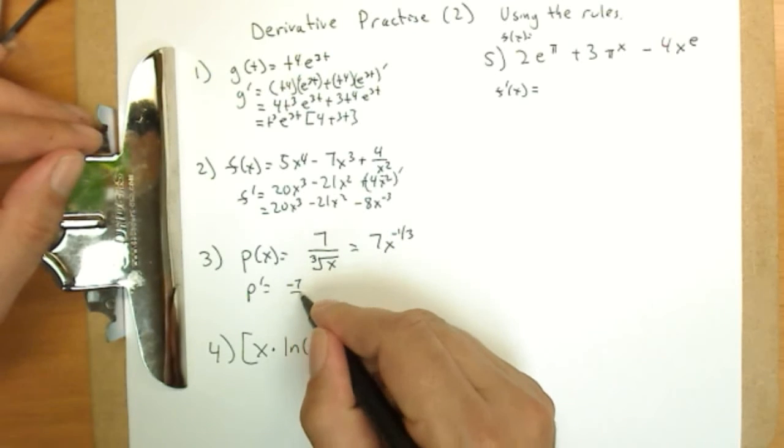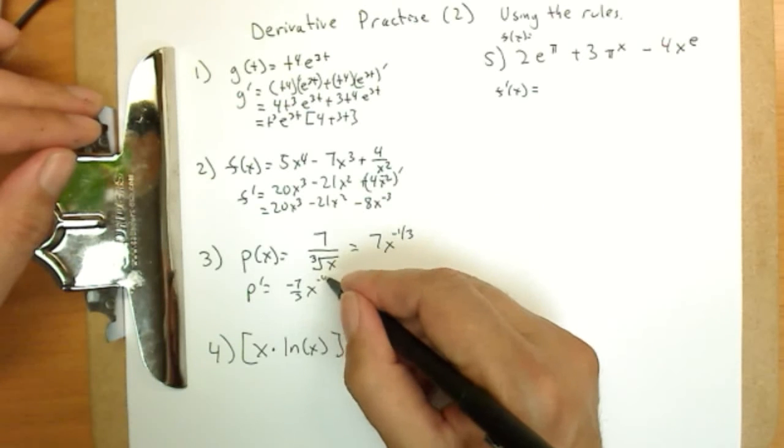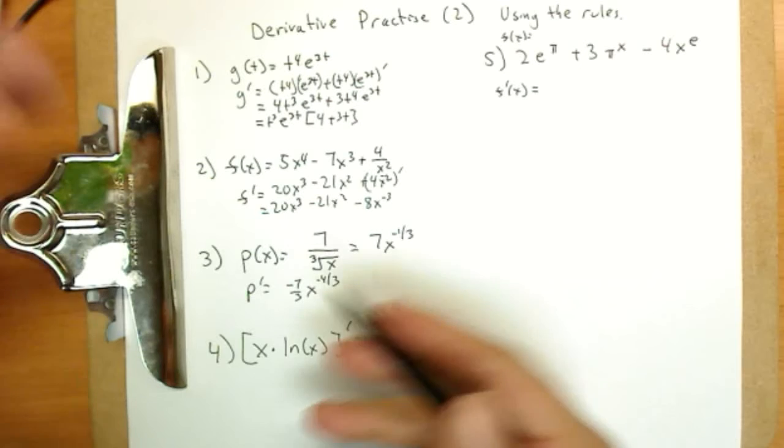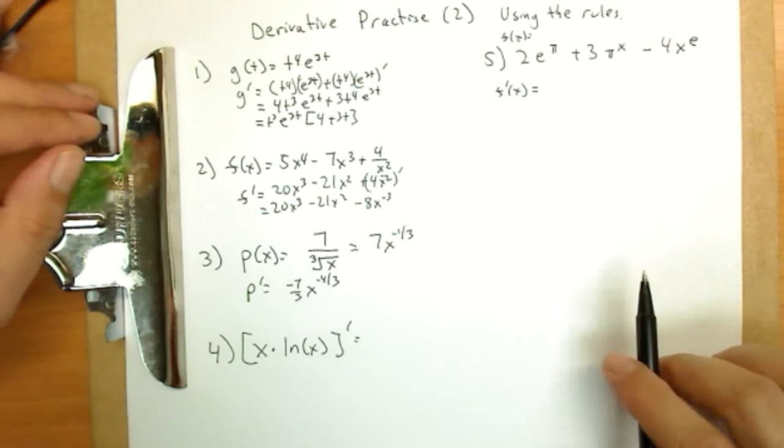Negative one-third comes out in front, so negative seven-thirds x. Negative one-third minus one would be negative four-thirds power. You can probably simplify and get rid of the negative roots, but mostly I'm concerned with the derivatives right now.